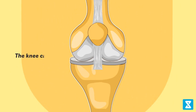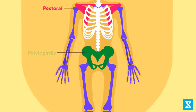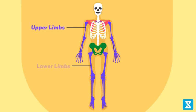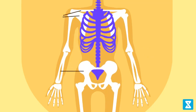The kneecap is a cup-shaped bone called the patella, which covers the knee ventrally. Pectoral and pelvic girdle bones help in the articulation of the upper and lower limbs respectively with the axial skeleton. Each girdle is comprised of two halves.